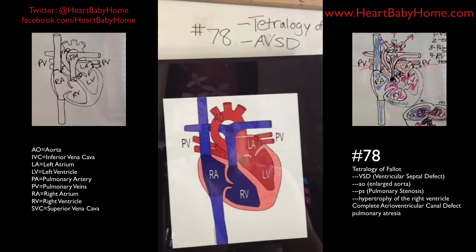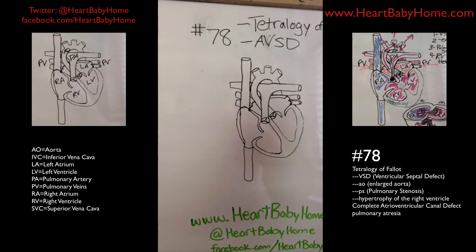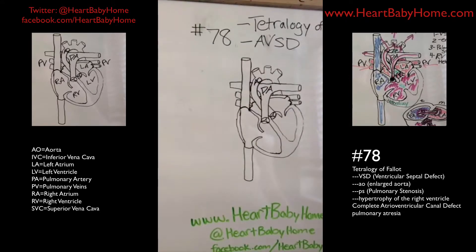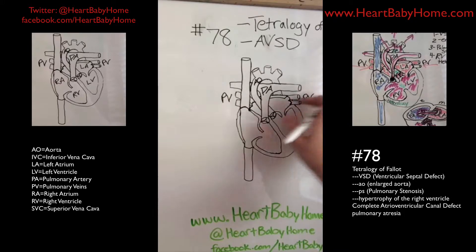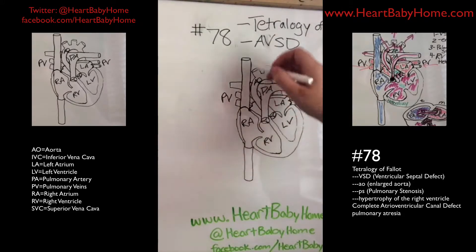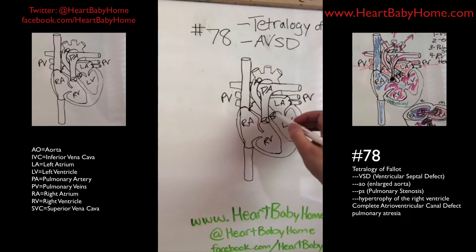We're starting off with a normal heart. We have our aorta, pulmonary artery, pulmonary veins that bring the blood back from the lungs to the heart, our left atrium, right atrium, right ventricle, left ventricle, superior vena cava, inferior vena cava, pulmonary valve, and aortic valve.